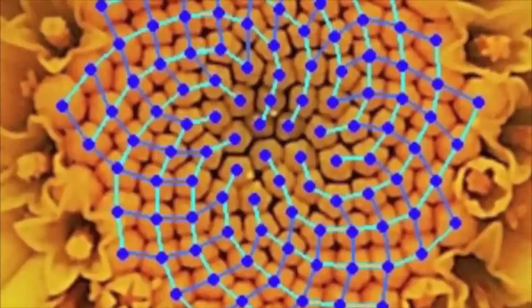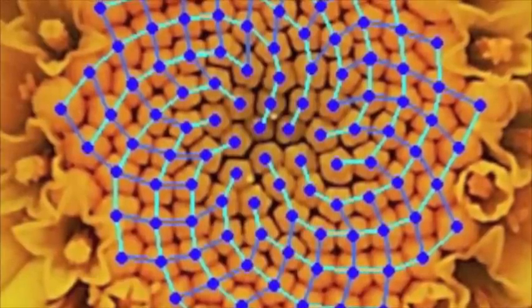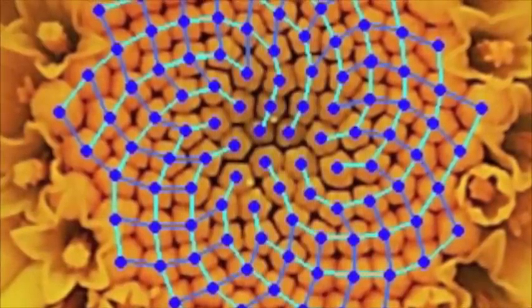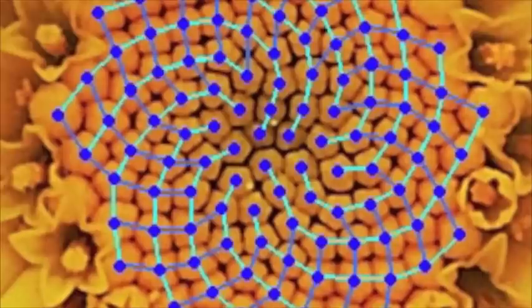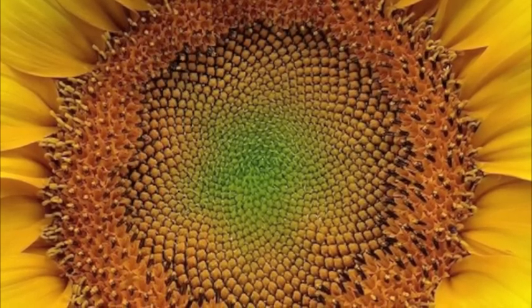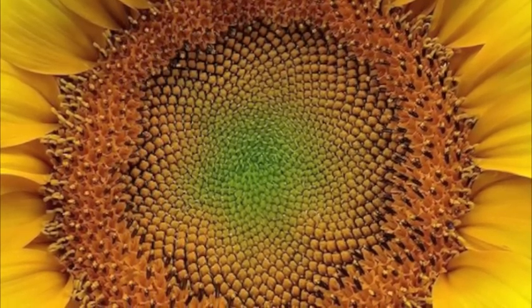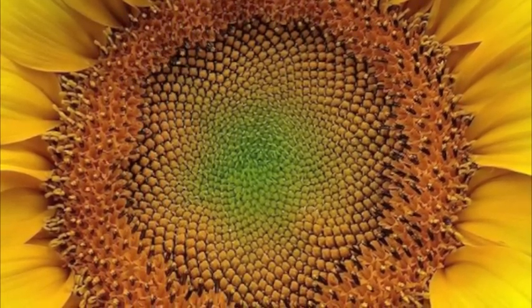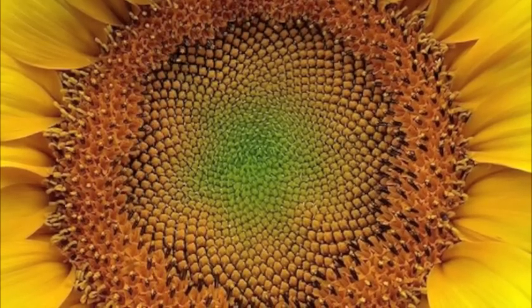Also, the Fibonacci sequence appears in seed heads, pine cones, pineapples, etc. The numbers of spirals going in each direction is a Fibonacci number. There are 13 spirals that turn clockwise and 21 curving counterclockwise on all sunflowers. The number of clockwise and counterclockwise spirals will always be consecutive Fibonacci numbers like 21 and 34 or 55 and 34.